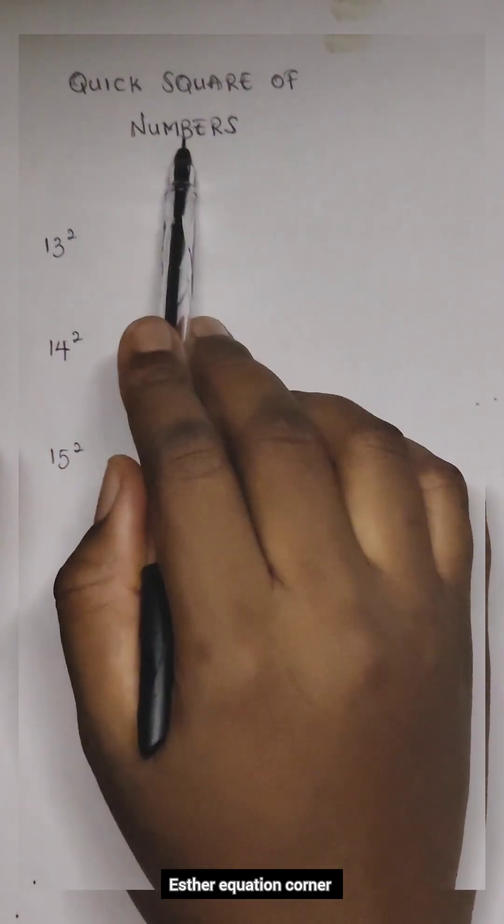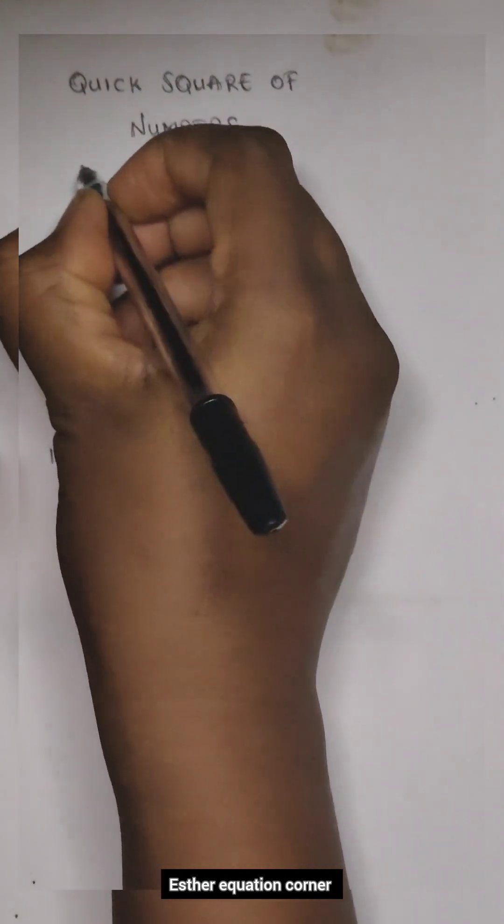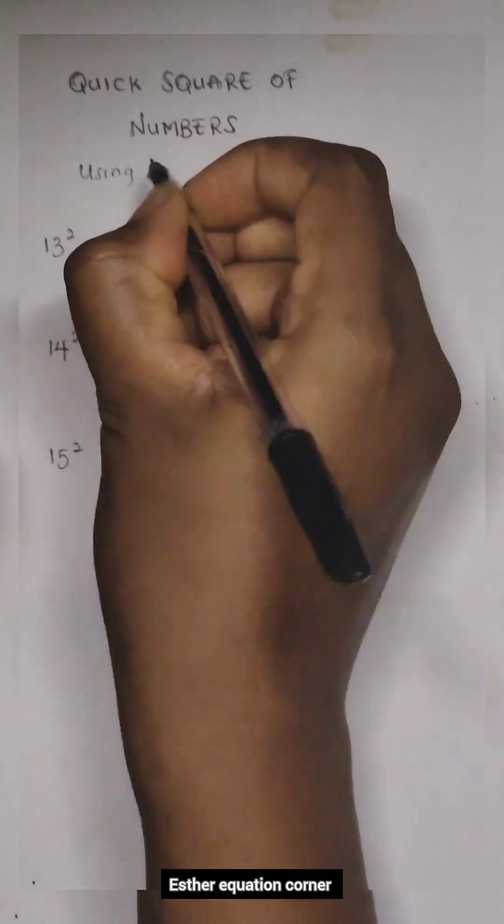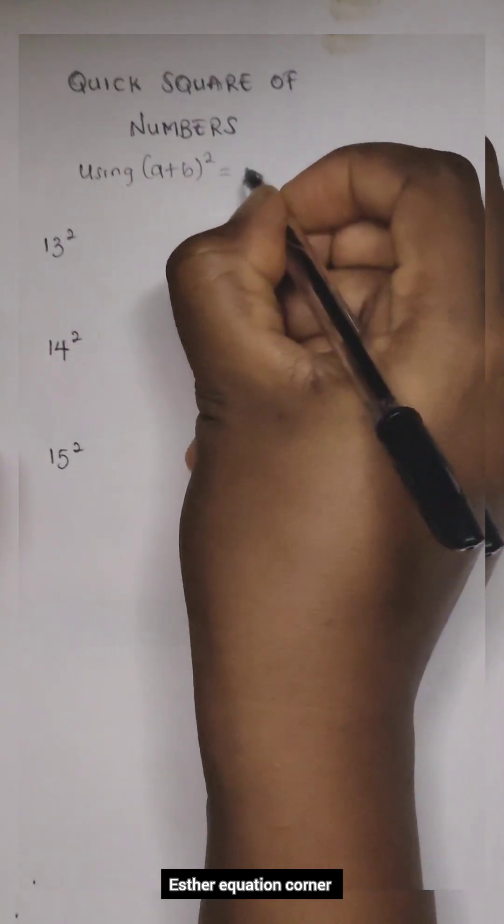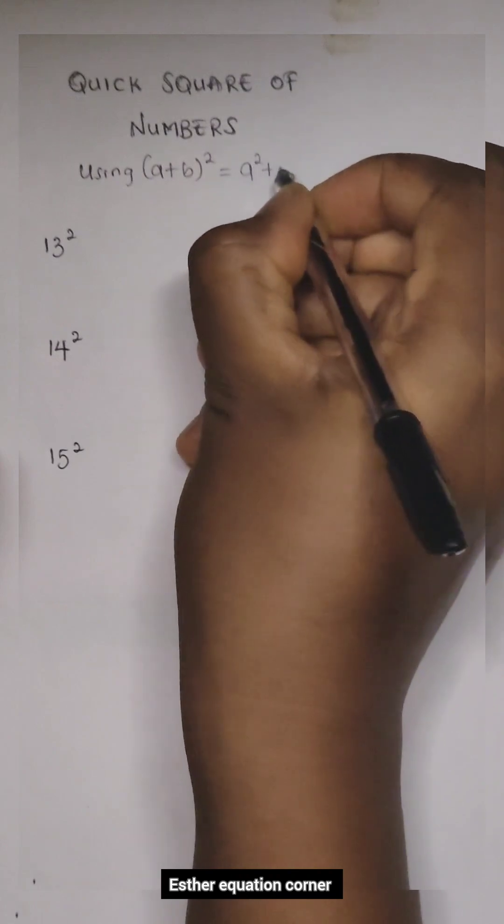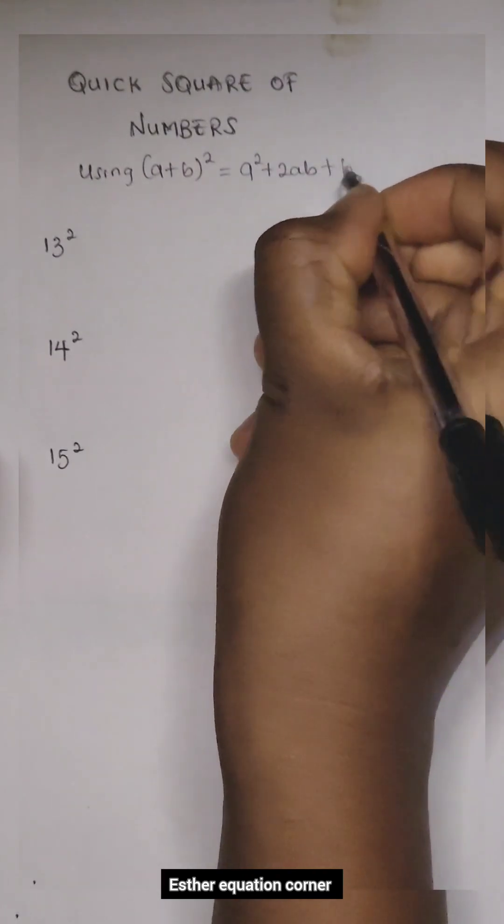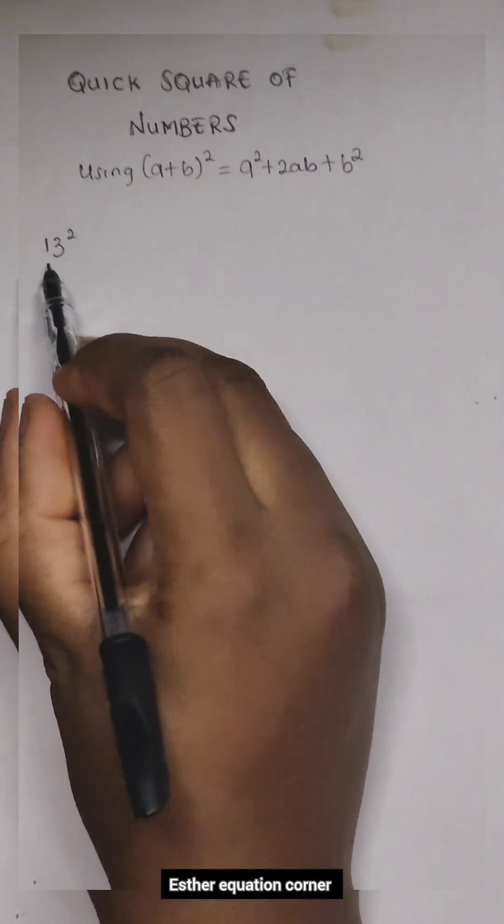Quick square of numbers using (a + b)² = a² + 2ab + b². So we have...